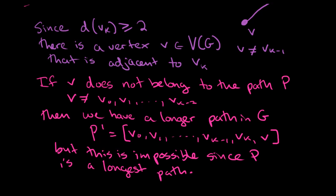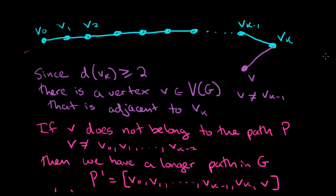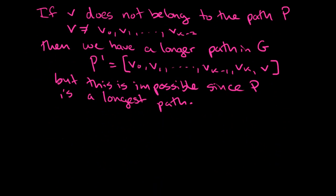It's not possible that V does not belong to the path. So this little picture that I drew up here where V was away from the path, that cannot happen. What must happen is that V is one of these vertices from the path.